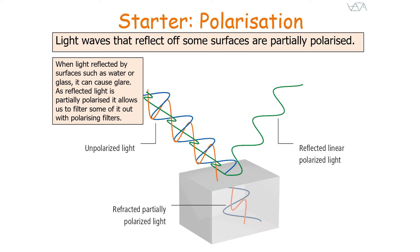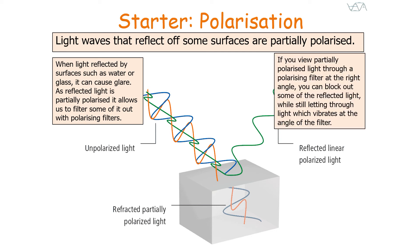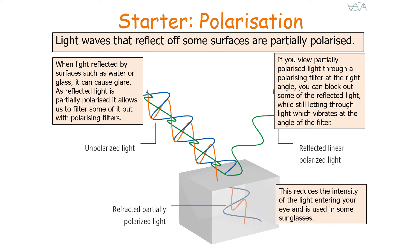As reflected light is partially polarised, it allows us to filter out some of it with polarising filters. If you view partially polarised light through a polarising filter at the right angle, you can block out some of the reflected light while still letting through light which vibrates at the angle of the filter. This reduces the intensity of the light entering your eye and is used in sunglasses.